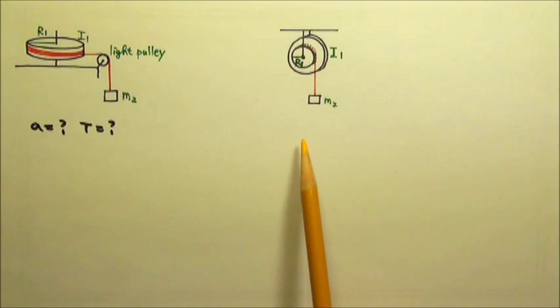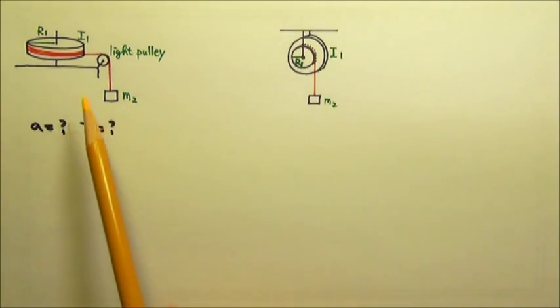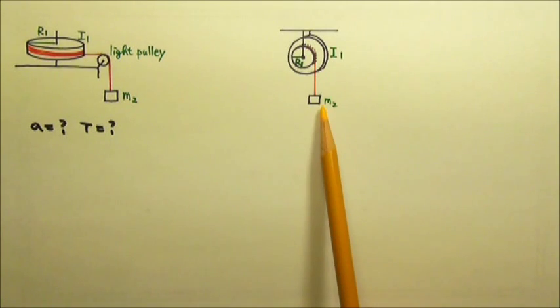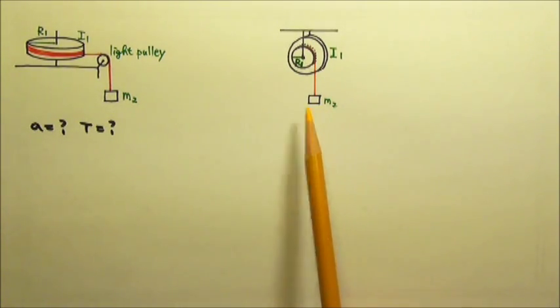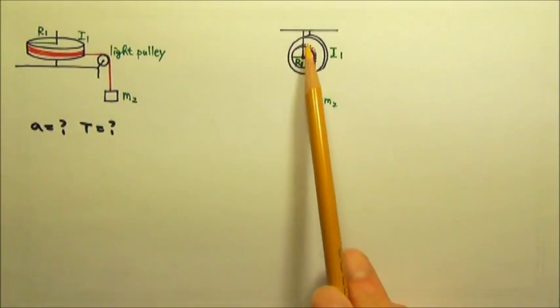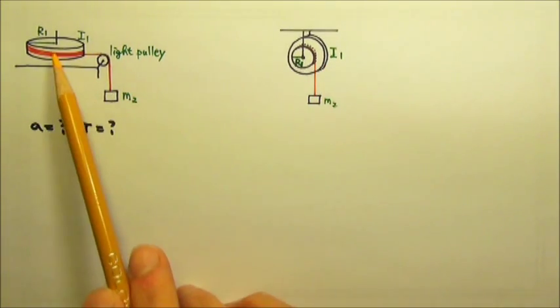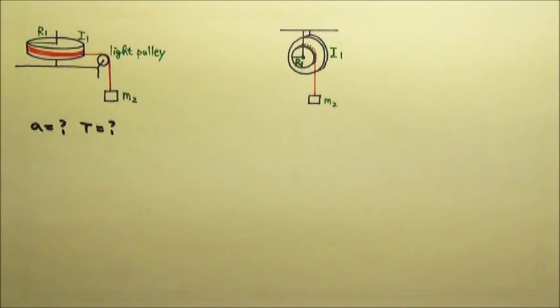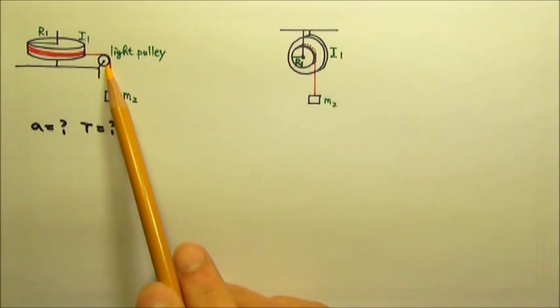We have problems like these when we have objects in the system that are rotating and objects doing translational motion. They are connected by a string that does not slip, and these rotational axes do not have friction. Let's say we are looking for the acceleration of the box and the tension in the string.